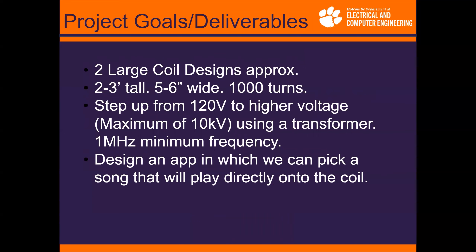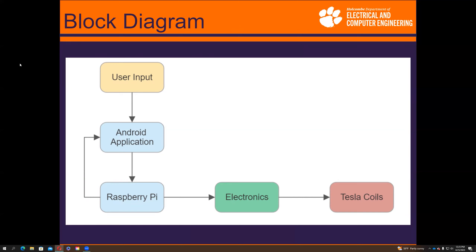This is a block diagram that describes the basic functionality of how our software interacts with our hardware. The user input is handled by the Android application, which sends a signal to the Raspberry Pi. The Pi then receives that signal and either responds to the app or sends the audio output to the electronics, which then convey this output to the Tesla coil.